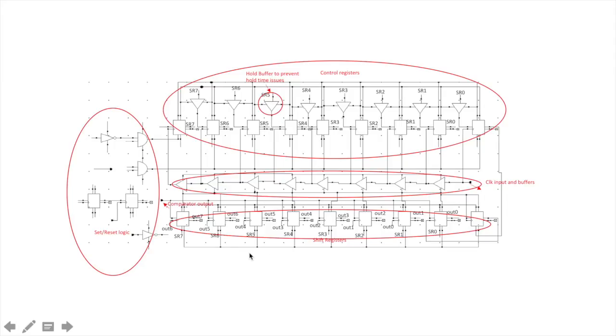In cycle 2, the next MSB bit, that is D6, is acted upon in the same manner. Thus, this goes on till all the bits are converted. The SAR logic schematic consists of 8 flip-flops. There are 8 shift registers and 8 control registers. The comparator output acts as a control bus logic for computing the output. The set and reset logic shown over here is used to reset the flops at the start of conversion cycle as well as indicate the end of conversion signal to the logic.